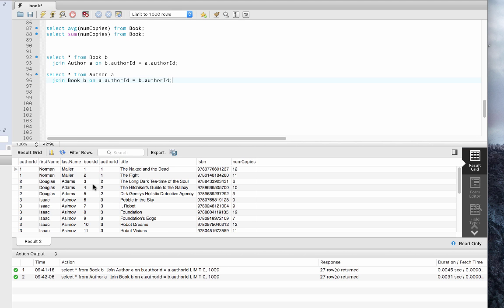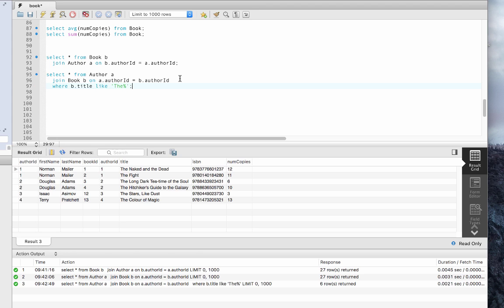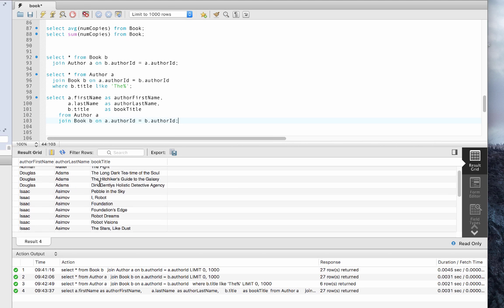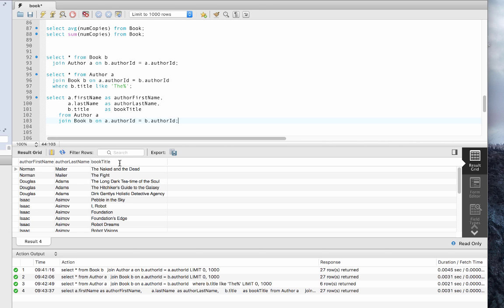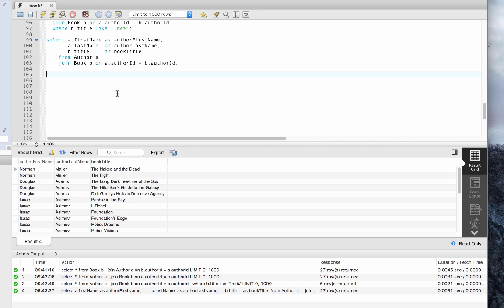We can also join the other way around. The order in which you join affects the order of the columns in the result. We can use a join in conjunction with where clauses and other aliases.